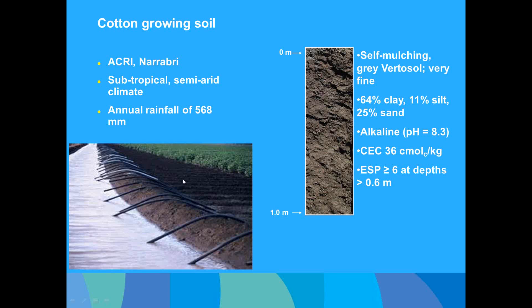A characteristic cotton growing soil is the cracking clay soil of the Namoi Valley — a self-mulching Vertosol with 64% clay and alkaline pH. Sodicity at depth is usually greater than 6, though fields close to the river tend to be non-sodic, with sodicity increasing as you move away from the river.